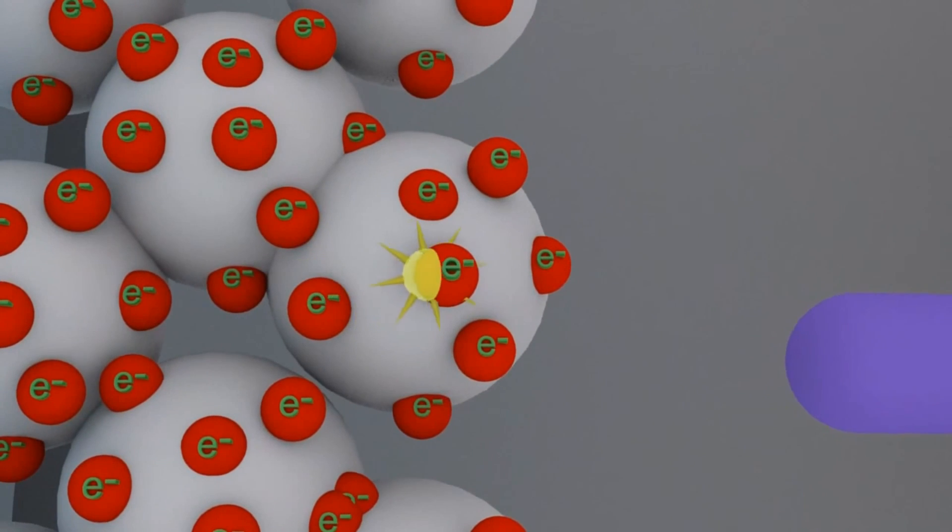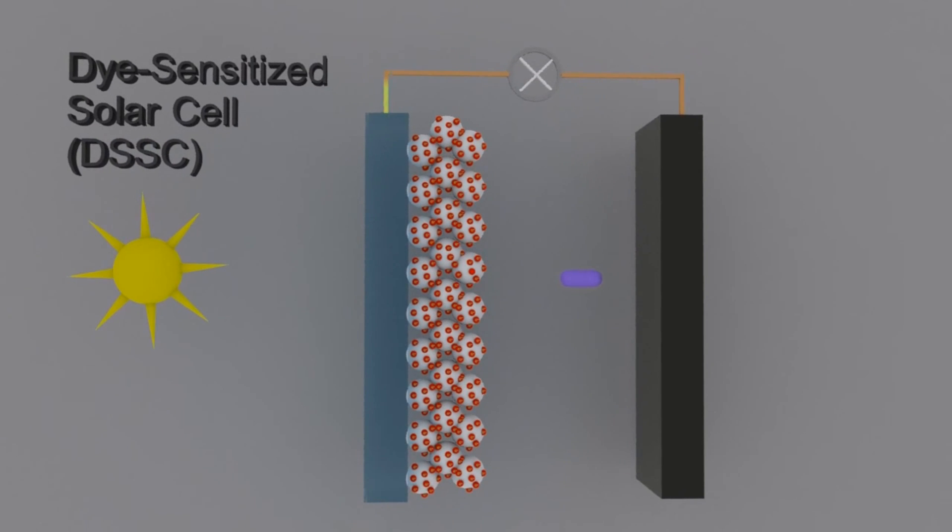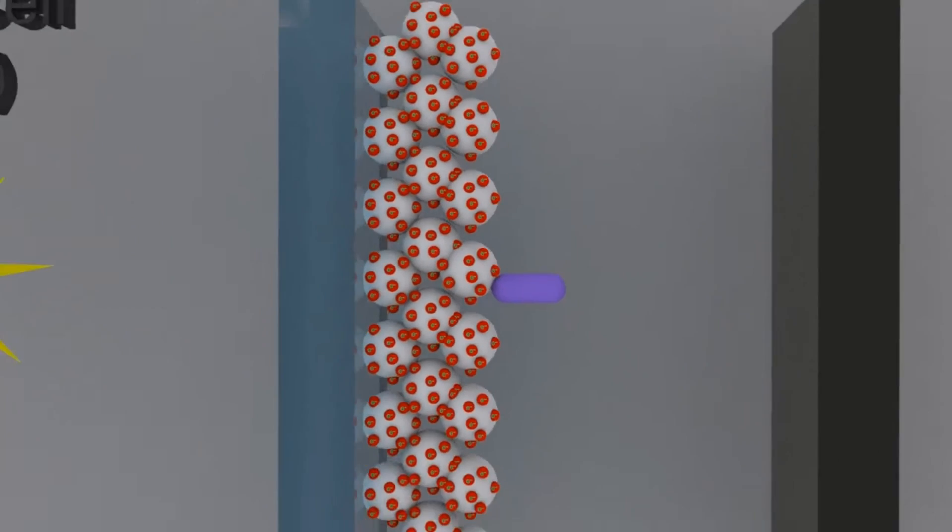So light comes from a source, it appears to kick out an electron which then goes round the circuit to the other electrode and is transported back again to the dye.